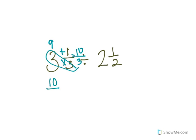Two and a half. I need to turn that into an improper fraction. Two times two is four, plus one is five, and my denominator stays the same, so that's going to be five-halves.